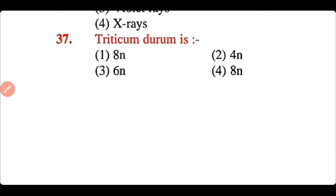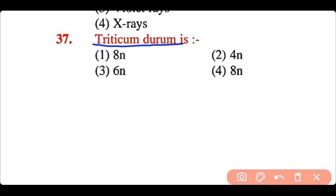Question 37: Triticum durum is: 8N, 4N, 6N, or 8N. The correct answer is option 2. Triticum durum is a tetraploid crop (4N).